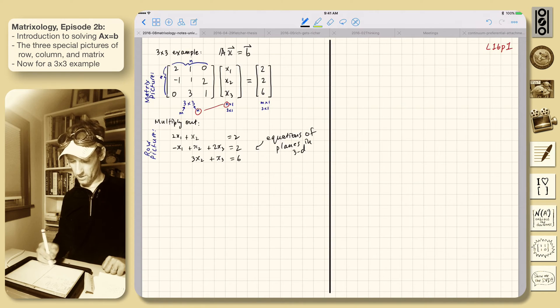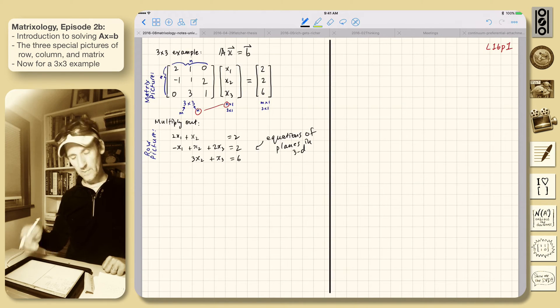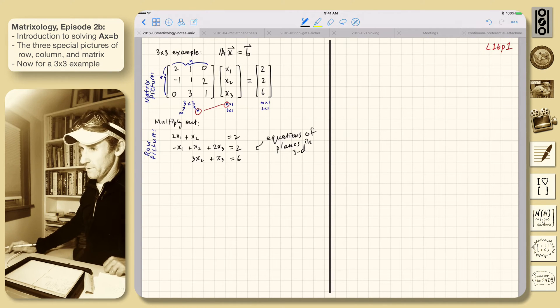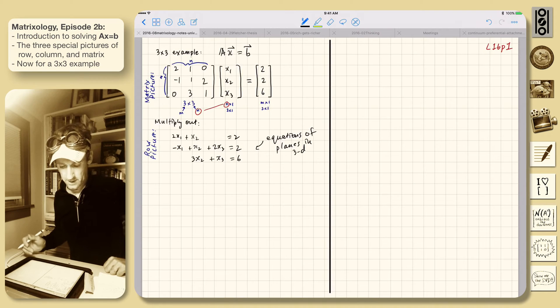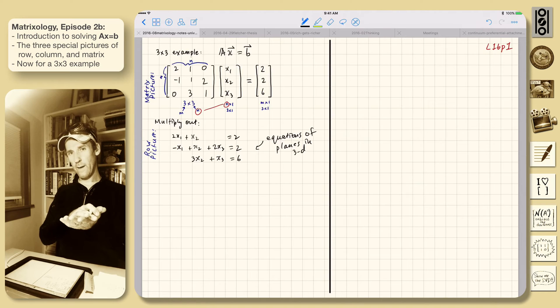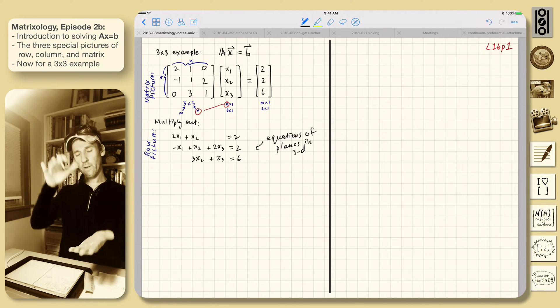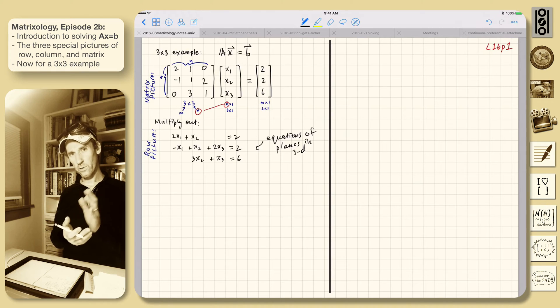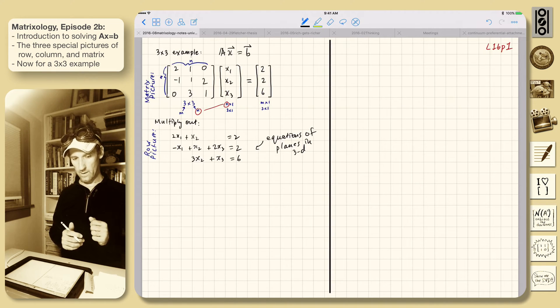So we want to find, so the job now is finding where these three planes intersect. And so this is more complicated than the two lines intersecting each other. They could be, planes could all intersect on a line. They could all overlap. One could be parallel to another. Right? So there could be, again, no solutions, infinitely many solutions, or one solution.